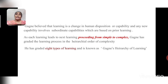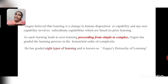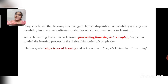As each learning leads to the next, proceeding from simple to complex, Gagne has graded the learning processes in hierarchical order of complexity. This is a blend of behavioral aspects of learning and cognitive aspects of learning. The lowest four orders form the behavioral aspects and the highest four focus on the cognitive aspects.